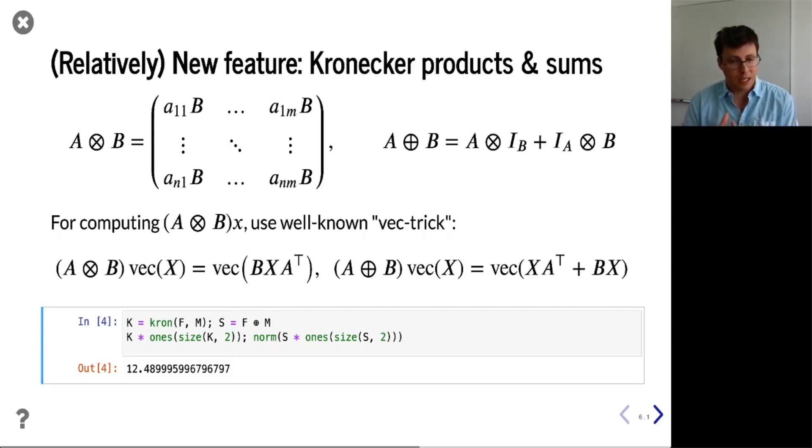But when it comes to computing A Kronecker B times x, it's highly advantageous to use a well-known trick called the vec trick. And once you use that one, there is no need to form matrix representation of your maps, but you can compute the action.